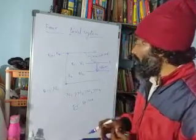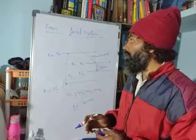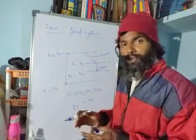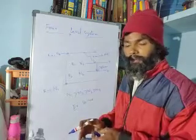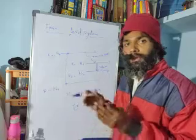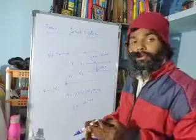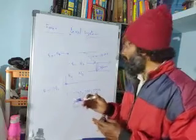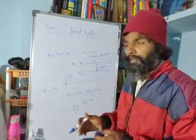To summarize: in two-level systems, we can never achieve population inversion even if we use infinite pumping energy. Alternatively, we can go to three-level or four-level systems where it is possible to achieve population inversion.